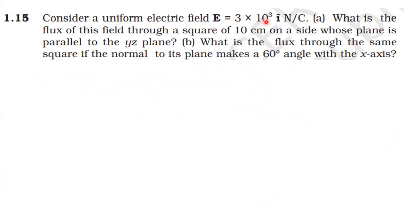Consider a uniform electric field E = 3×10³ î N/C, meaning it is along the positive x-axis. First, find the flux through a square of 10 cm side whose plane is parallel to the y-z plane. Second, find the flux through the same square if the normal to its plane makes 60° with the x-axis. Since the field is along x and the square is in the y-z plane, the normal is also along x, so angle θ = 0°.